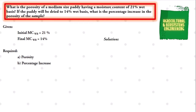First, let us solve for the value of the porosity. We will be solving individually the porosity of the initial and final moisture content. We begin solving the porosity for the initial moisture content wet basis of 21%. To solve for the porosity in a medium-sized patty, we will be using the formula: porosity is equal to 69.05 minus 0.885, multiplied by the moisture content in wet basis. Take note that this is only the formula to be used for a medium-sized patty.